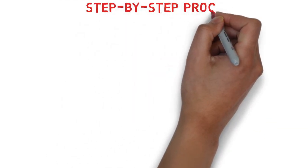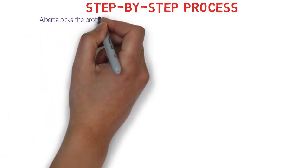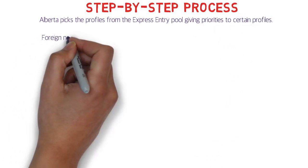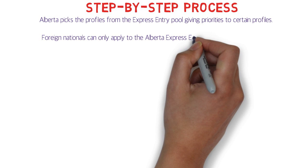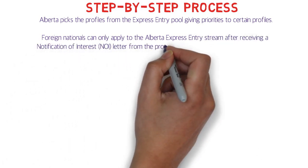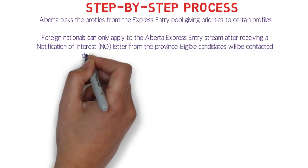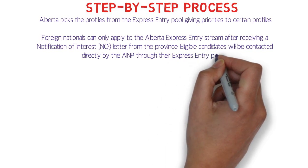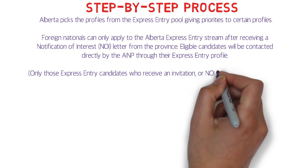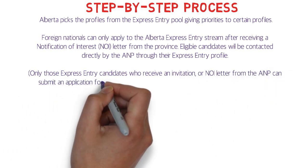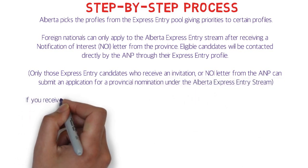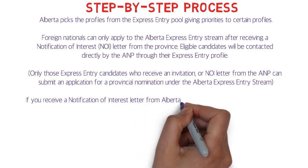Now the step-by-step process: Alberta picks profiles from the Express Entry pool, giving priority to certain profiles as described. Foreign nationals can only apply to the Alberta Express Entry Stream after receiving a Notification of Interest (NOI) letter from the province. Eligible candidates are contacted directly by AINP through their Express Entry profile. Only those who receive an NOI letter from AINP can submit an application for a provincial nomination.